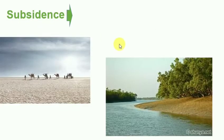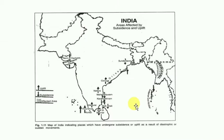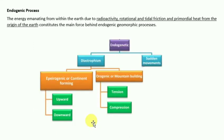In subsidence, submerged forests and valleys, as well as submerged buildings, are evidence of subsidence. Examples include the Sundarbans and the Rann of Kutch. In a diagram, upward areas represent uplift, while downward areas such as the Gulf of Mannar and the Sundarbans are examples of subsidence.